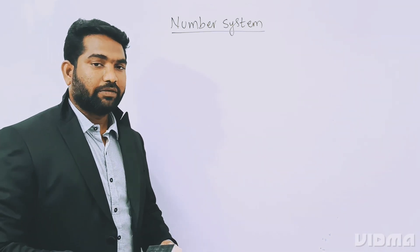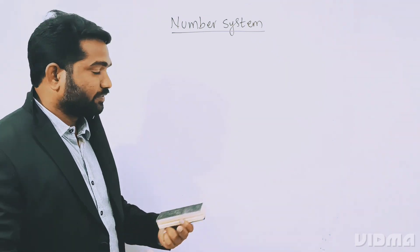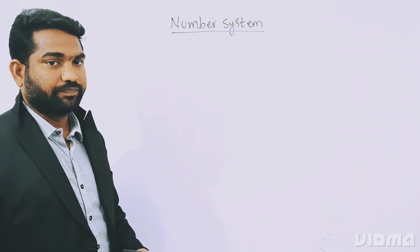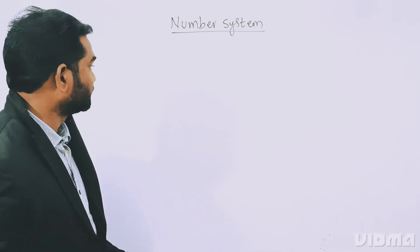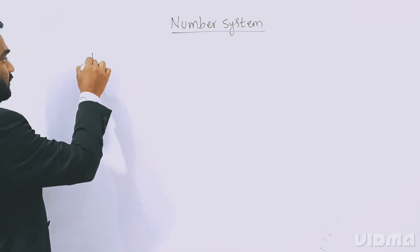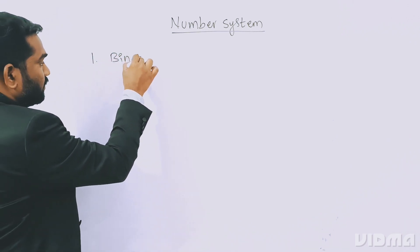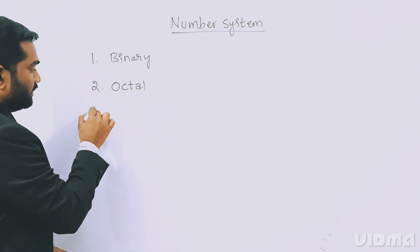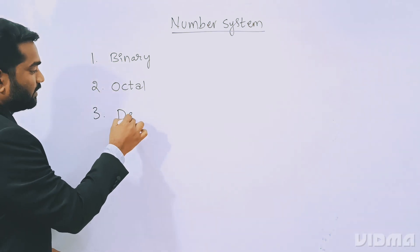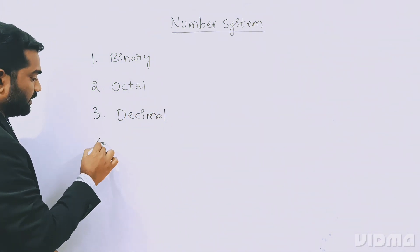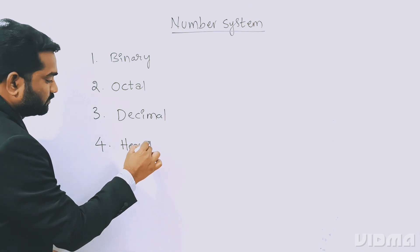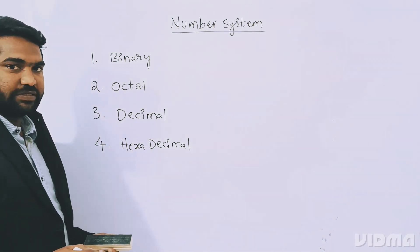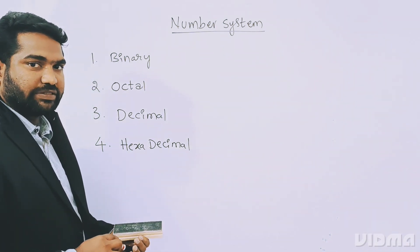We will understand what is base — also called radix — and what is the structure of each and every number system. Basically, we have four types of number systems: the first one is binary number system, the second is octal number system, the third is decimal number system, and the fourth is hexadecimal number system.